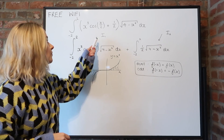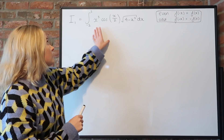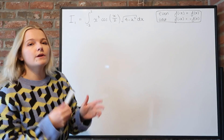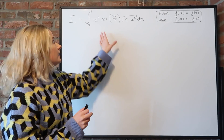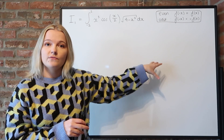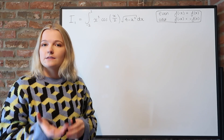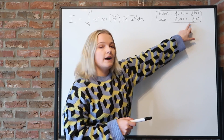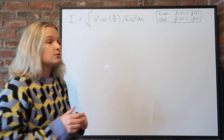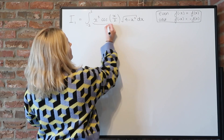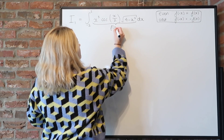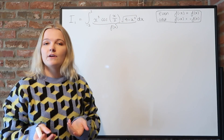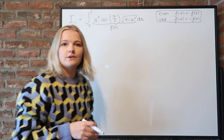Now we're going to try and prove that the function inside integral I1 is an odd function, so that when you integrate it you get zero. We need to prove that f(−x) = −f(x) holds. So we'll call the integrand f(x) and show that plugging in minus x gives the same value with a minus sign in front.